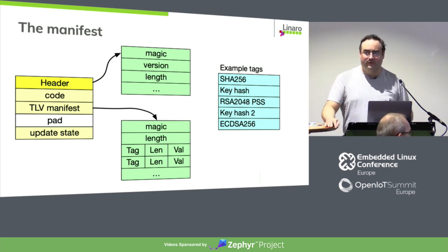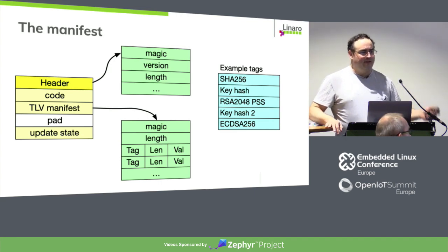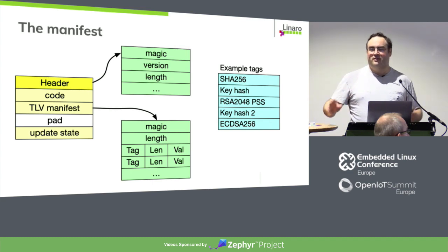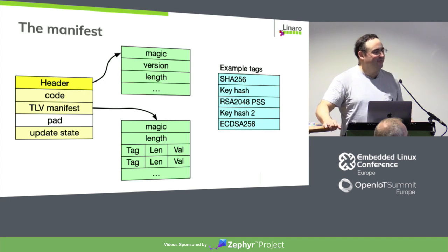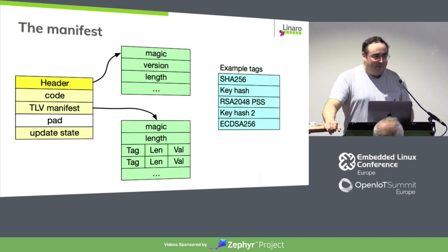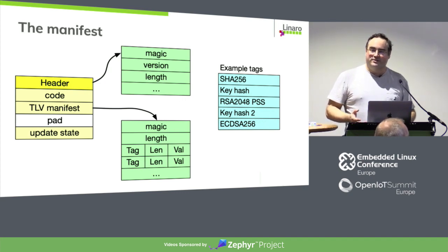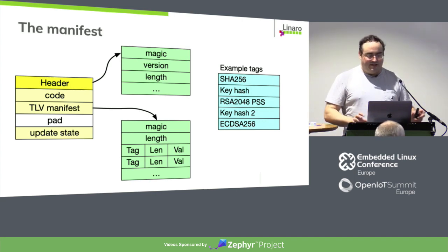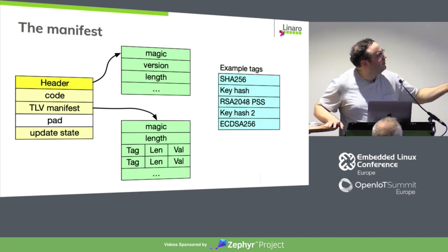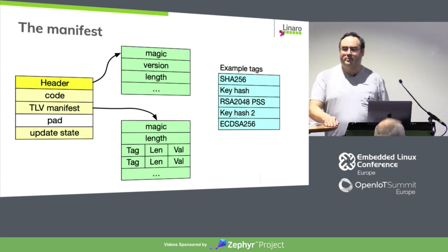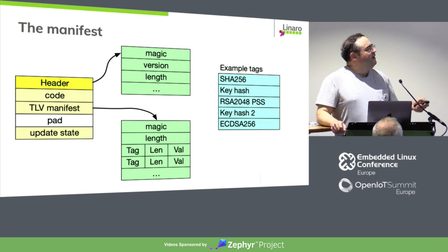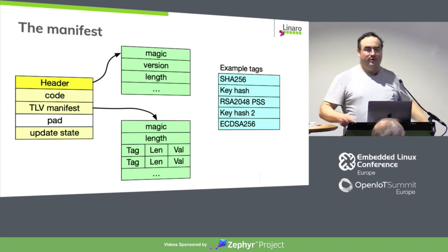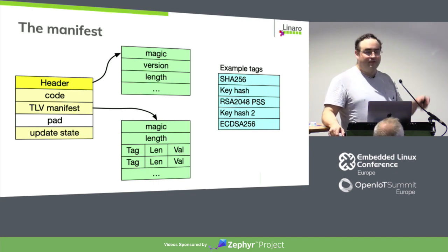I want to get a little further into what makes this complicated. I talked about the manifest — unfortunately in MCU boot code we just call it a TLV, which is a hint: don't name things after the data structure they're implemented with. That manifest is the metadata describing the image to be run, broken into two pieces. There's a header that lives before the image — about 32 bytes — containing a magic number, a version field, length, flags, and a couple other things.